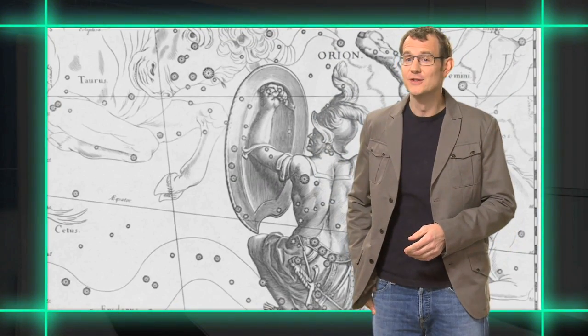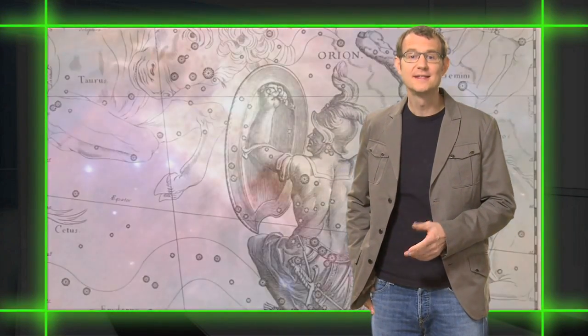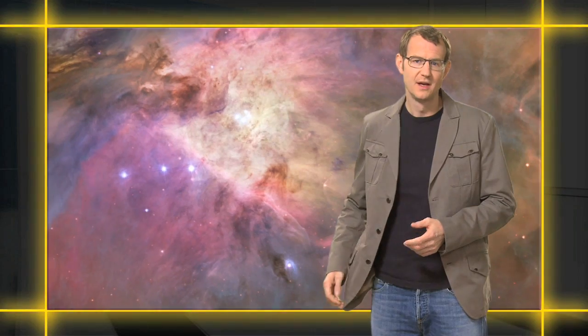In the sword, just under the belt in the constellation of Orion the Hunter, is the majestic Orion Nebula. The Orion Nebula is one of the best-known examples of a star-forming nebula, a swirling cloud of gas and dust where stars begin their journey of life.